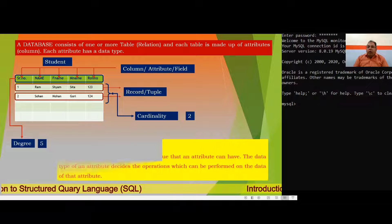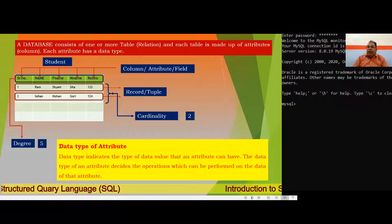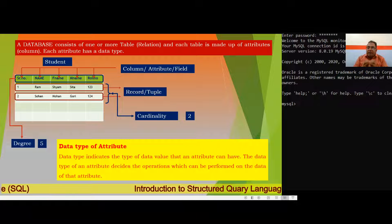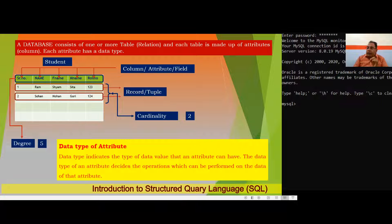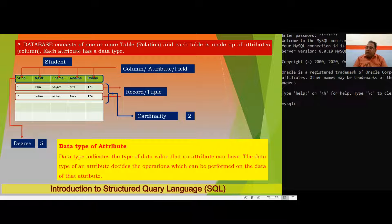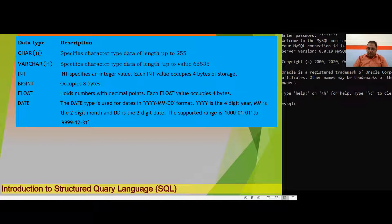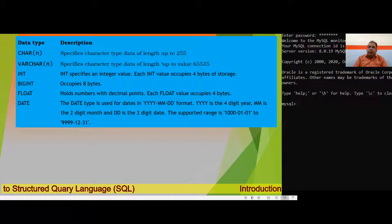When creating a table or defining the structure of a table, we must define the data type of each attribute — meaning which type of data value that attribute can contain. The data type of an attribute decides the operations which can be performed on its data. The common data types are: CHAR, VARCHAR, INT, BIGINT, FLOAT, and DATE.